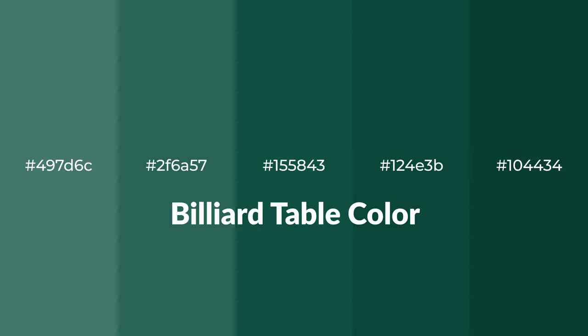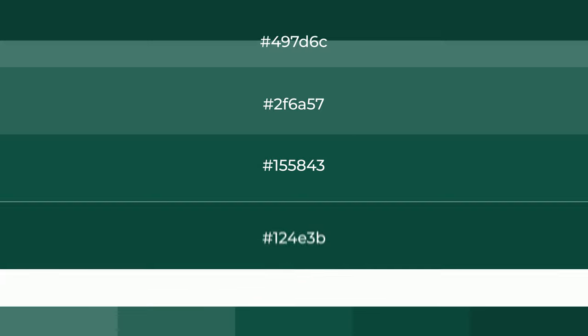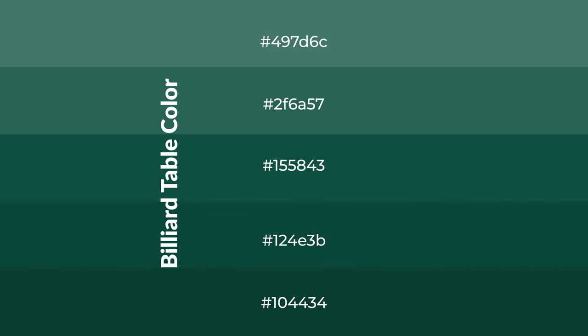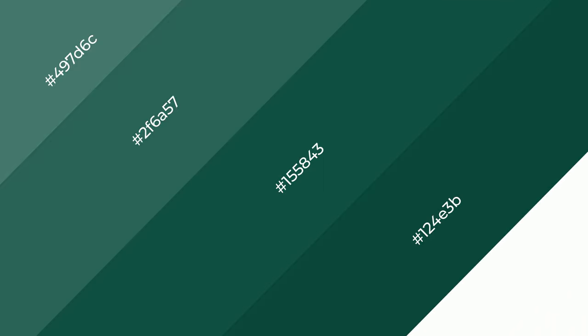Cool shades of billiard table color with green hue for your next project. To generate tints of a color, we add white to the color. Tints create light and exquisite emotions. To generate shades of a color, we add black to the color, and it is used in patterns, 3D effects, and layers. Shades create depth and drama.